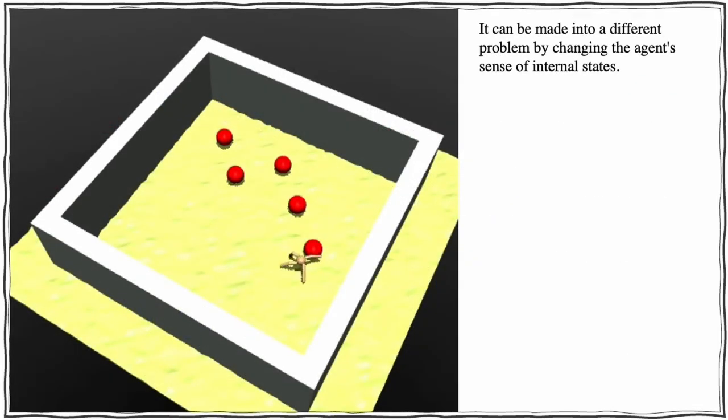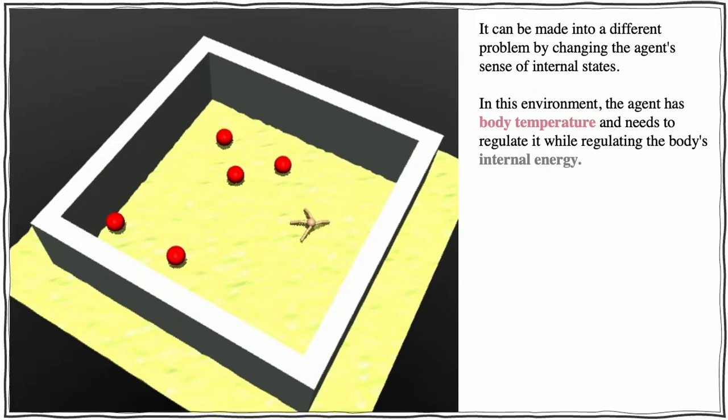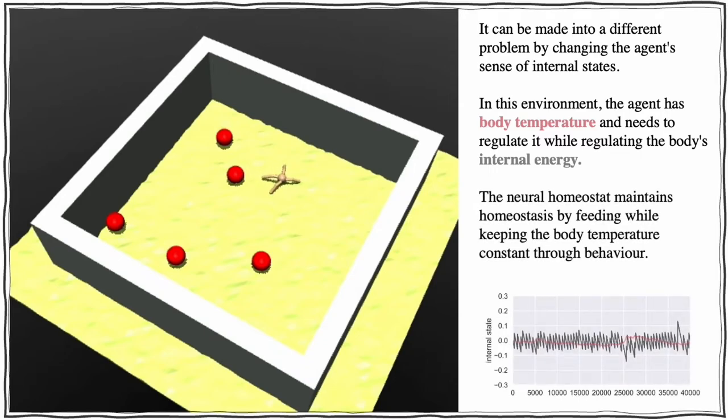It can be made into a different problem by changing the agent's sense of internal states. In this environment, the agent has body temperature and needs to regulate it, while regulating the body's internal energy. The neural homeostat maintains homeostasis by feeding while keeping the body temperature constant through behavior.